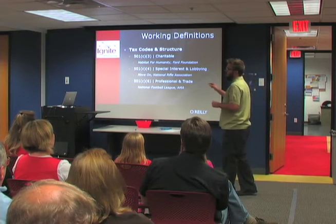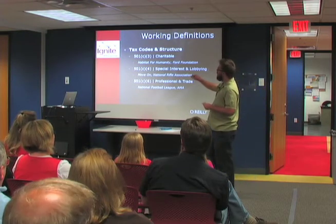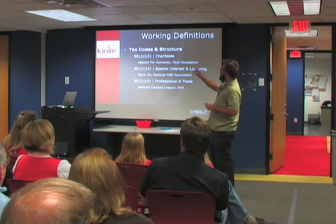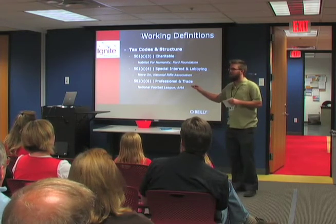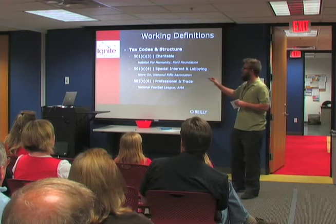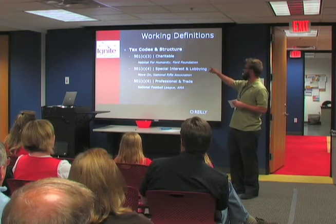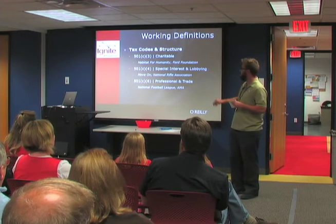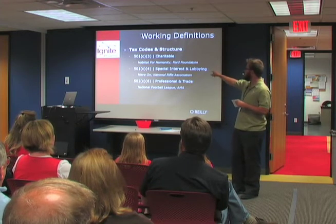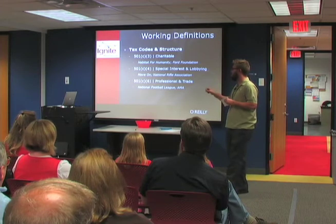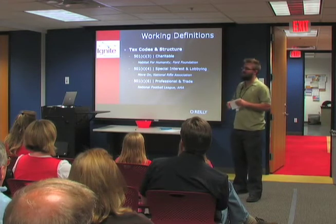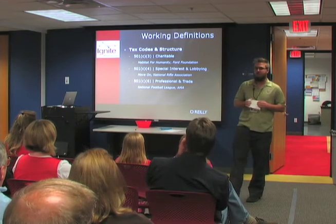This might be boring, but it's really important. There are three major tax codes that nonprofit organizations operate in. C3 is for charitable organizations, like Habitat. C4 is for special interest or lobbying, and C6 is for professional or trade organizations.